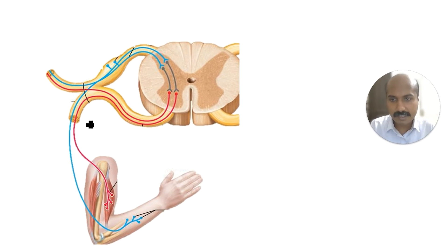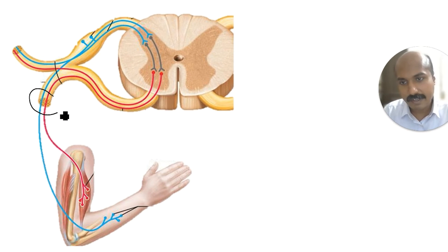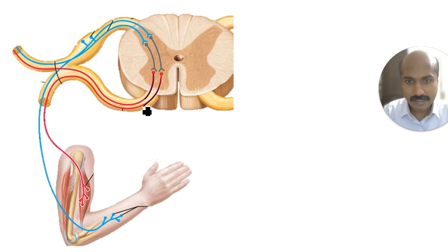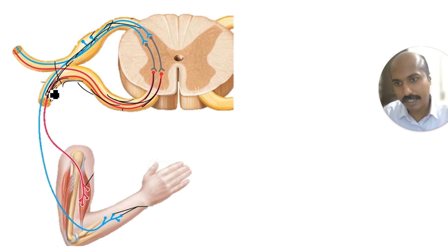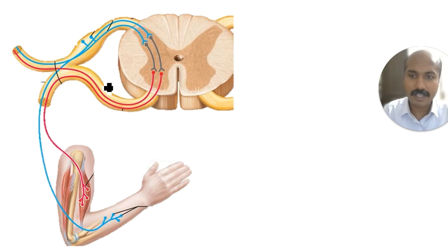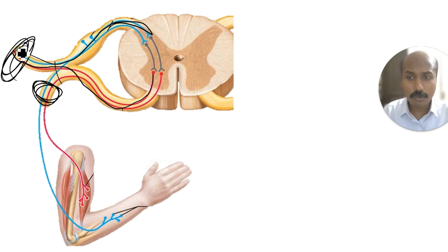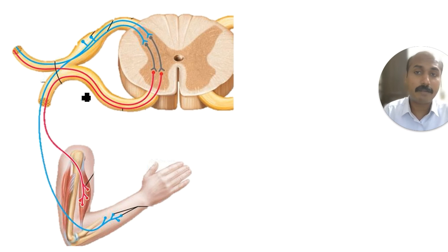Have a look at the ventral ramus here — the red fibers are representative of motor fibers, and you can see these motor fibers joining the ventral ramus. The sensory fibers are also joining the ventral ramus, so the ventral ramus is mixed. The dorsal ramus is also mixed — this red fiber emerging from the ventral root is a motor fiber, and this blue fiber coming from the dorsal root is a sensory fiber. So both dorsal ramus and ventral ramus are mixed nerves.